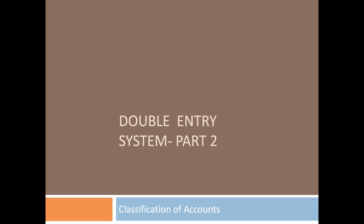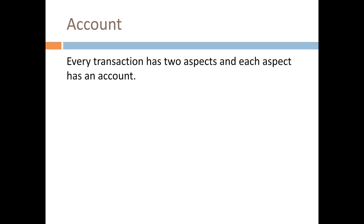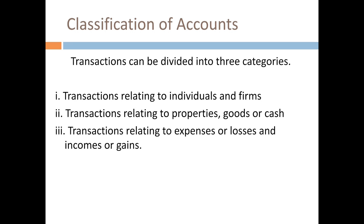In the classifications of accounts, we are going to be in the WNR system. Every transaction has two aspects and each aspect has an account. This is the account of all transactions — one of the debit and credit aspects. We are going to have a debit and credit account for each transaction.